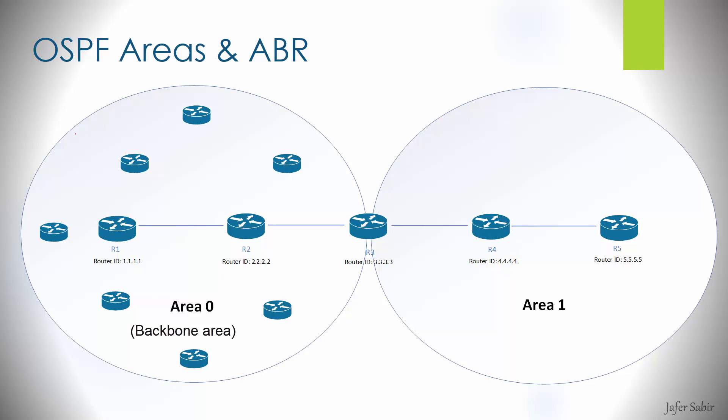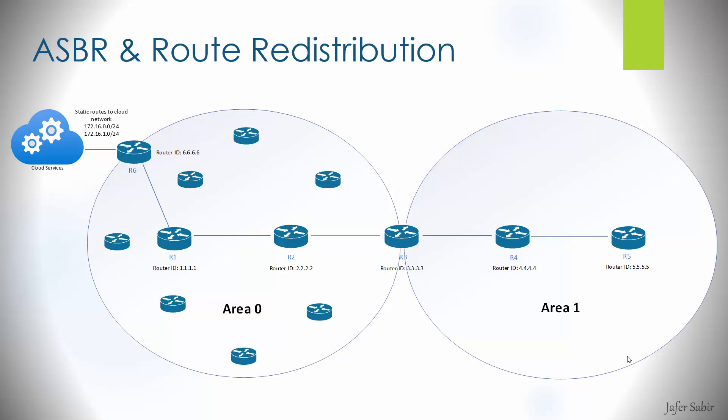A real-world example of multiple areas: you might have an office in London where all routers are placed in OSPF Area 0, and offices in New York placed into Area 1. This is good design practice because when changes happen in London, you want those changes to stay within London — you don't want to sync them over a slow WAN link to New York, and vice versa. Keeping London and New York in their own areas prevents unnecessary cross-site OSPF traffic.